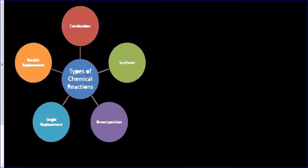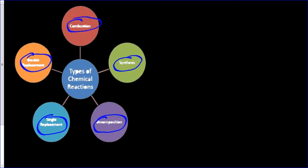So on our left we have a picture of the types of chemical reactions. We have synthesis, decomposition, single replacement, double replacement and combustion.